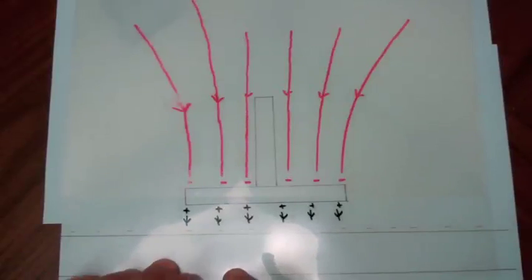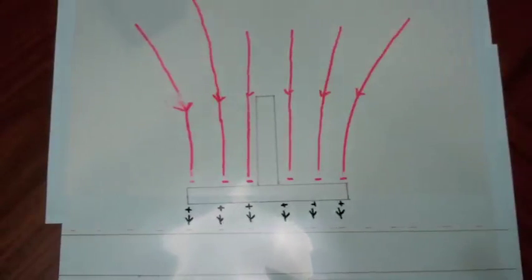So remember in a static situation we cannot have any electric field lines inside the metal here, otherwise we wouldn't have a current flow.